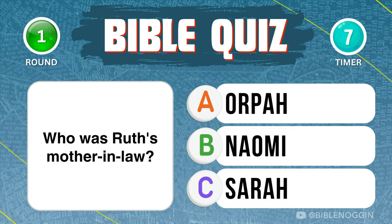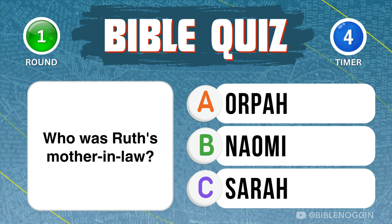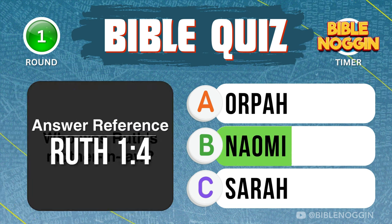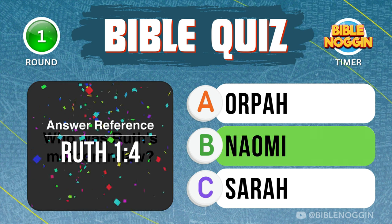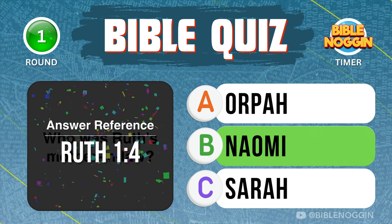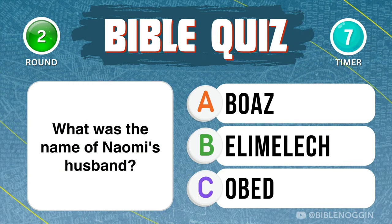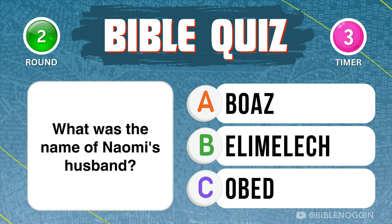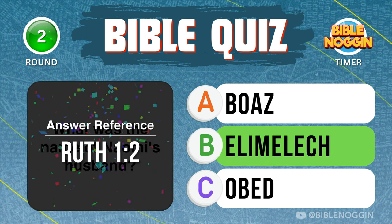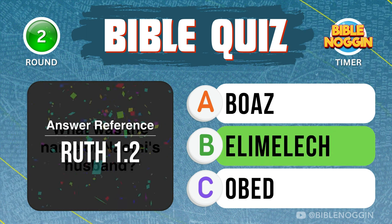Question 1: Who was Ruth's mother-in-law? Naomi — found in Ruth chapter 1, verse 4. Question 2: What was the name of Naomi's husband? Elimelech — found in Ruth chapter 1, verse 2.